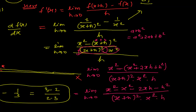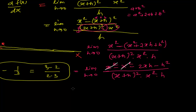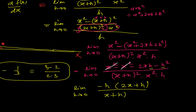So again limit when h tends to 0. Now I can open this bracket: x² minus x² minus 2xh minus h², divided by (x+h)² times x² times h. I can cancel the positive x² with the negative x², and then take out minus h as a common factor — since both remaining terms have h — getting minus h times (2x + h) in the numerator. So I can cancel this h with the h in the denominator.